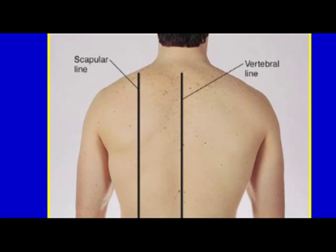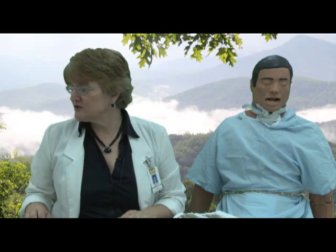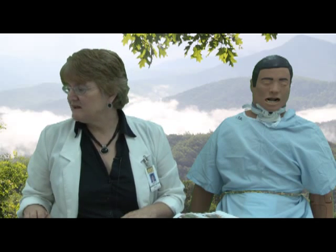We also reference lateral lines when listening to lung sounds. The mid-axillary line is used often because the right lung has three lobes — the middle lobe is listened to under the right arm at the mid-axillary line, about the fifth intercostal space.